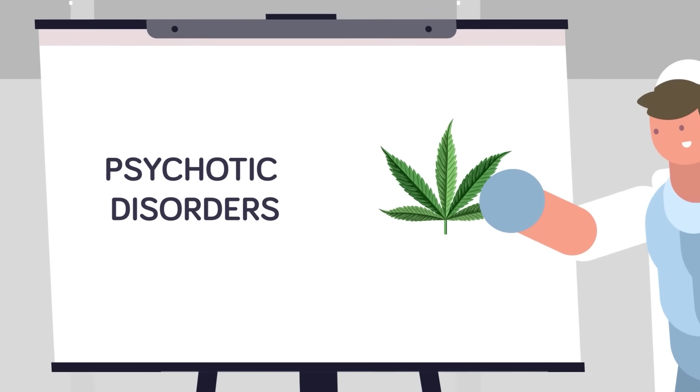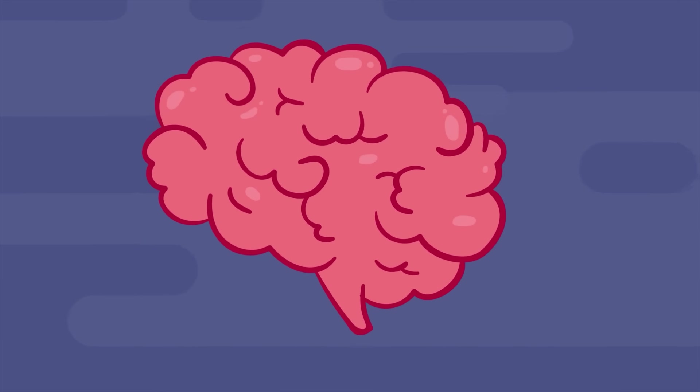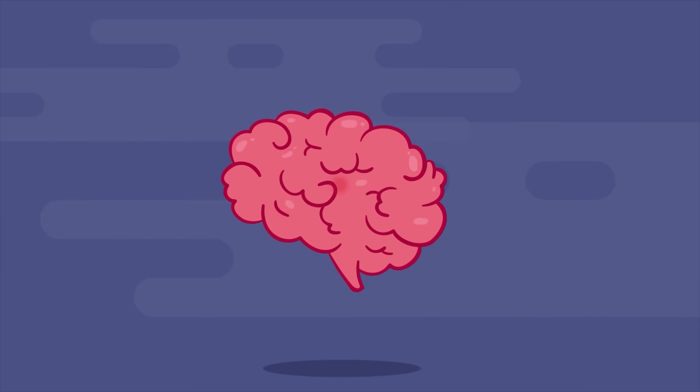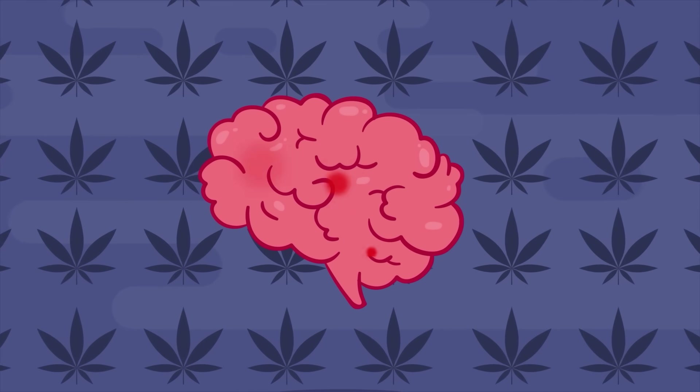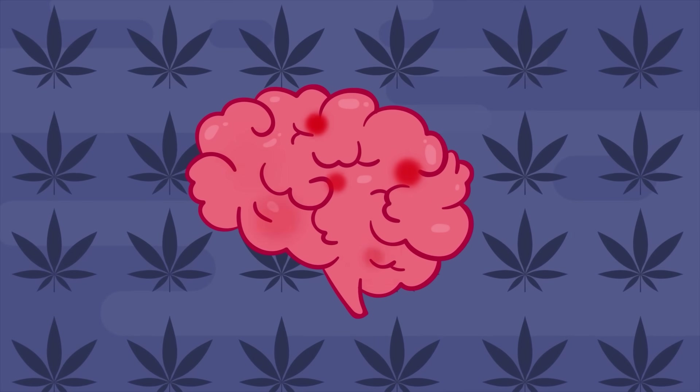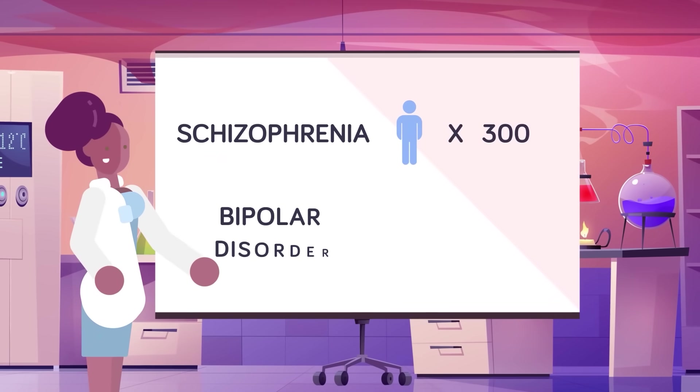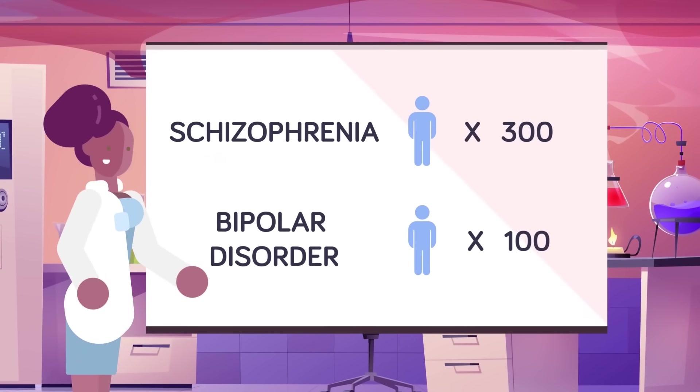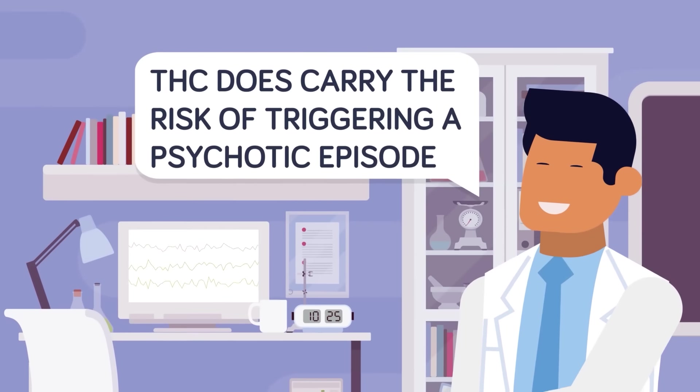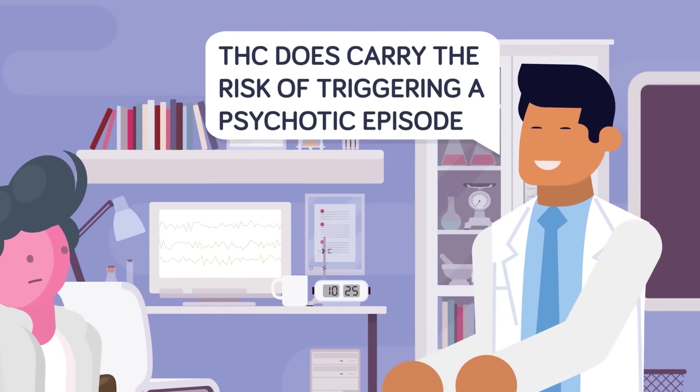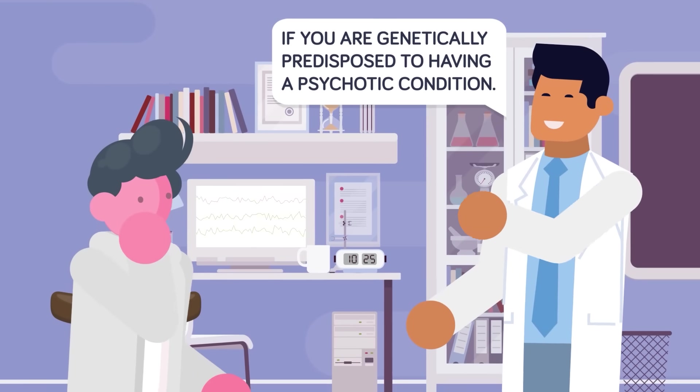Most scientists believe that weed can, in some cases, accelerate the development of underlying psychotic disorders. The brain is a very complex and delicate thing. If somebody has an underlying psychotic condition, then the consumption of drugs that alters their state of mind and heightens activities within certain sections of the brain can naturally lead to an exacerbation of those symptoms. Schizophrenia is believed to affect 1 in 300 people, while bipolar disorder affects 1 in 100. While these are quite small percentages, they are not insignificant. THC does carry the risk of triggering a psychotic episode if you are genetically predisposed to having a psychotic condition. The chances are very low and won't affect the majority of the population, but they are still there.